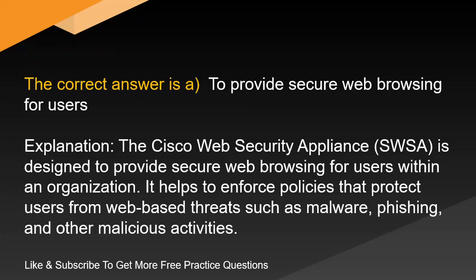The correct answer is A. To provide secure web browsing for users. Note: The explanation here discusses Cisco Unified Computing System (UCS), a converged infrastructure solution that integrates computing, networking, storage access, and virtualization resources into a cohesive system, simplifying data center operations, improving resource utilization, and enhancing scalability and flexibility.